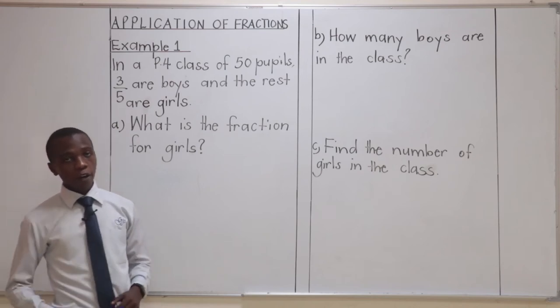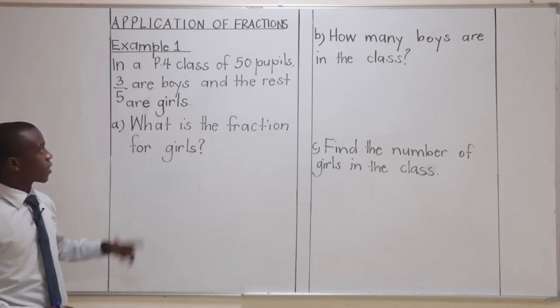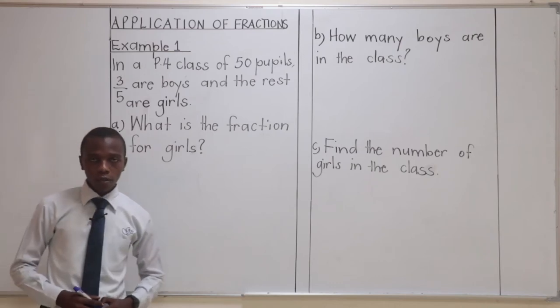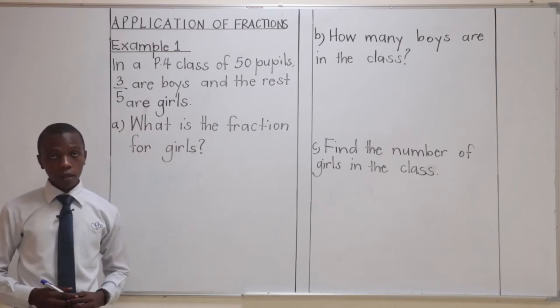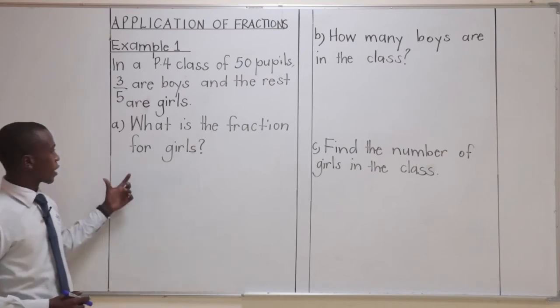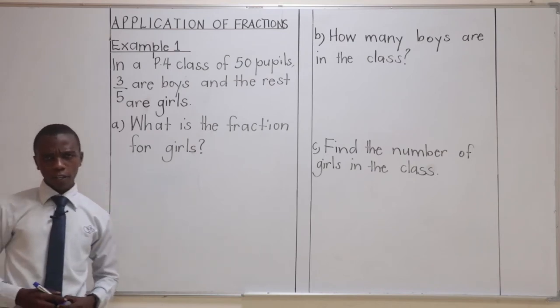To start with, we have an example here. We are saying in a P4 class of 50 pupils, 3 out of 5 are boys and the rest are girls. Now, there are questions attached. One, what is the fraction for girls?